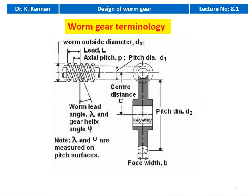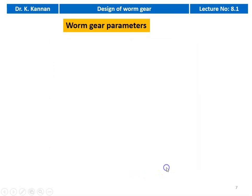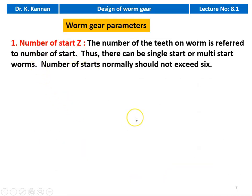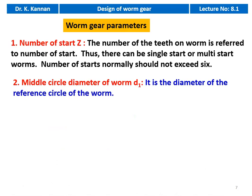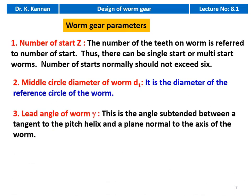These are the terminology of the worm and worm gear drive. We have the worm and the worm gear, with terminology including: center distance, length of the worm, lead angle, axial pitch, pitch circle diameter D1, pitch diameter of the wheel, worm lead angle, gear helix angle, and face width of the gear. The number of starts — the number of teeth on the worm — is referred to as the number of starts. There can be a single start or multi-start worm; number of starts normally should not exceed 6. The middle circle diameter of the worm D1 is the diameter of the reference circle of the worm. The lead angle of the worm, gamma, is the angle subtended between the tangent to the pitch helix and a plane normal to the axis of the worm.